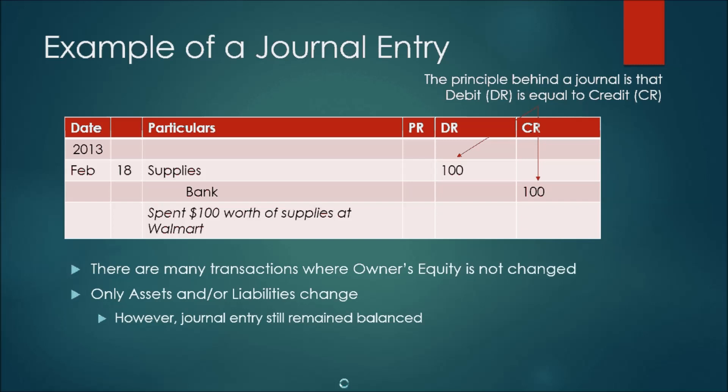Here is an example of a standard journal entry. You can see the date — it's 2013, February 18th. In this journal entry, two accounts are being modified: the supplies account and the bank account. The supplies account is being debited by $100, and the bank account is being credited by $100. All the accounts that are being credited are always indented — just like the bank is indented and the supplies is not — just to make it look nice.